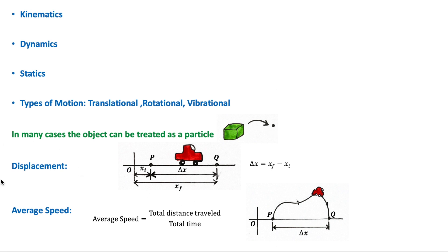The first concept we're going to discuss is displacement. Consider a car treated as a particle moving along a straight line along the x-axis. The displacement of the car is a vector quantity defined as the change in the car's position relative to the origin O during a certain time interval. Displacement equals x-final minus x-initial, and depends only on the initial and final positions. In one dimension, direction is specified by a plus or minus sign.